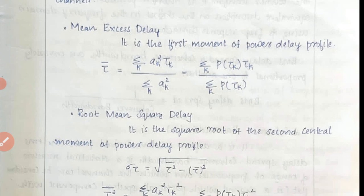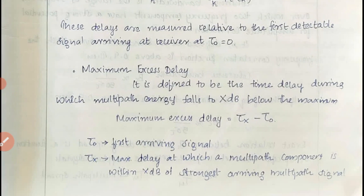The maximum excess delay is defined as the time delay during which multipath energy falls to X dB below the maximum. It is represented as τₓ − τ₀, where τₓ is the maximum delay at which a multipath component is within X dB of the strongest arriving multipath signal, and τ₀ is the first arriving signal.